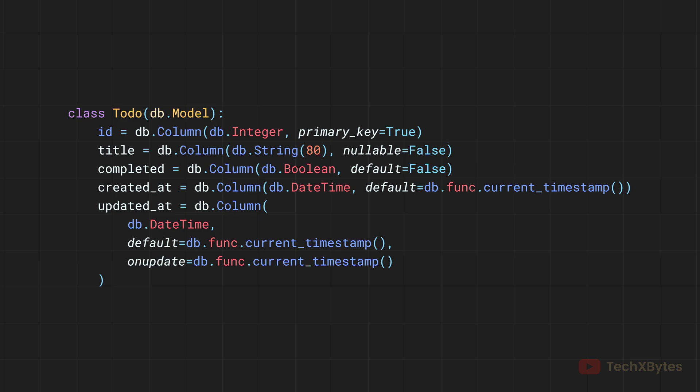Now we define our database model. We are creating a Todo model that represents a single to-do item in our application. The Todo class inherits from db.Model, which is the base class for all models in Flask-SQLAlchemy. In case you are not familiar with Python object-oriented programming, please check out a 20-minute video on OOP in Python — you can find it in the description below or click on the eye icon on the top right corner of the screen.